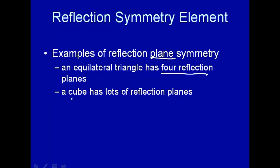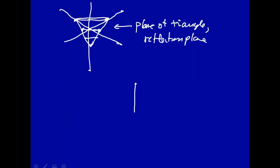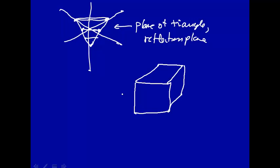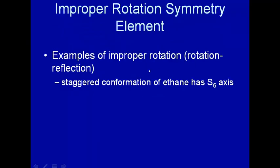If you look at a cube, it has lots of reflection planes — a reflection plane here, here, here, there, and so on. Finally, we have a combination of a rotation and then a reflection. The staggered conformation of ethane has an S6 axis, and we'll illustrate that in class since it's difficult to do in two dimensions.